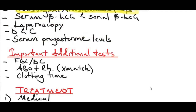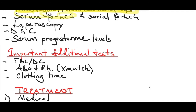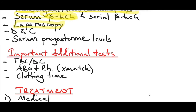If the urine pregnancy test is positive and ultrasound shows the pregnancy is not in the uterus, you've confirmed an ectopic pregnancy. But in cases where it's not obvious — ultrasound shows nothing and the pregnancy test is negative — you can order a serum beta-human chorionic gonadotropin. Beta-HCG is a glycoprotein hormone produced by the placenta that doubles every 48 hours. If beta-HCG is not doubling as it should, this suggests an ectopic pregnancy. You can also do a laparoscopy to directly visualize the fallopian tubes, ovaries, and broad ligament to confirm or exclude ectopic pregnancy.